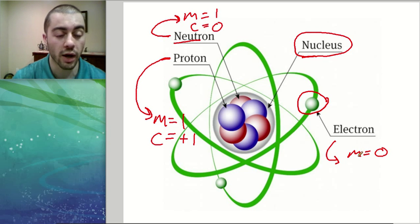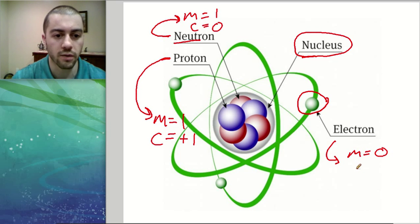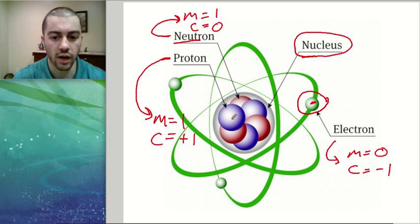Electrons actually do have a very small amount of mass but it's so small compared to the protons and neutrons that we don't count it towards the mass of the atom. So electrons count for zero mass and they have a charge of negative one. So electrons are negative and protons here in the middle are positive.